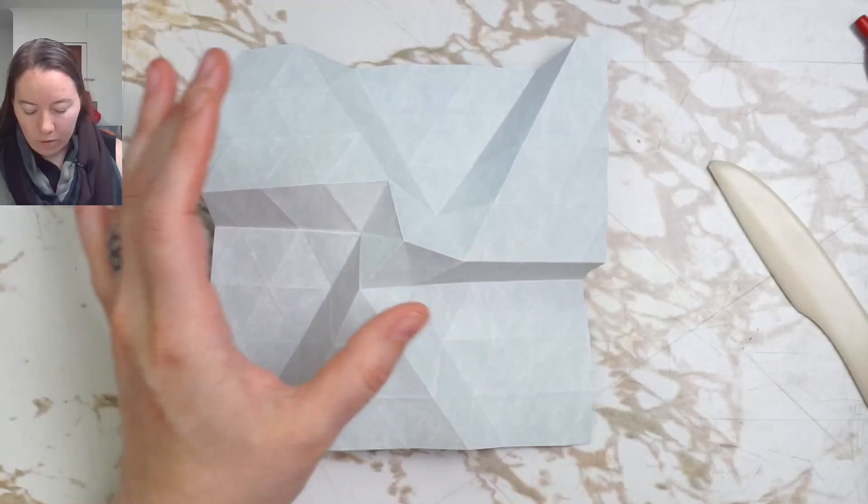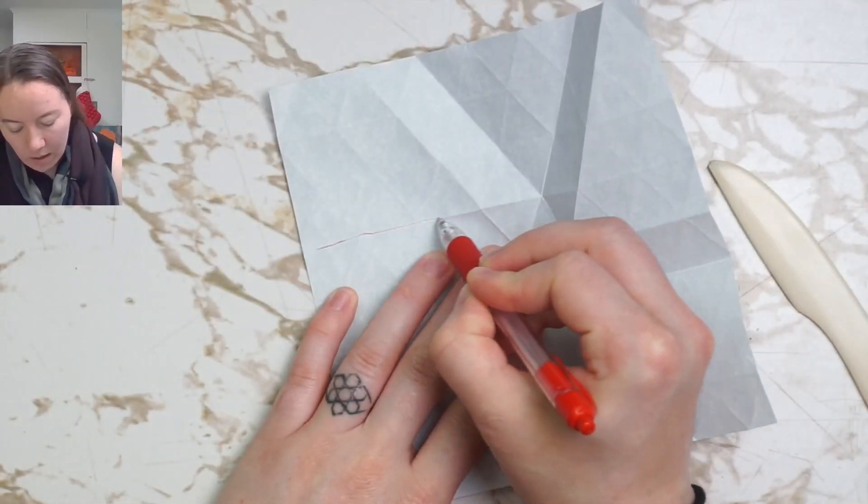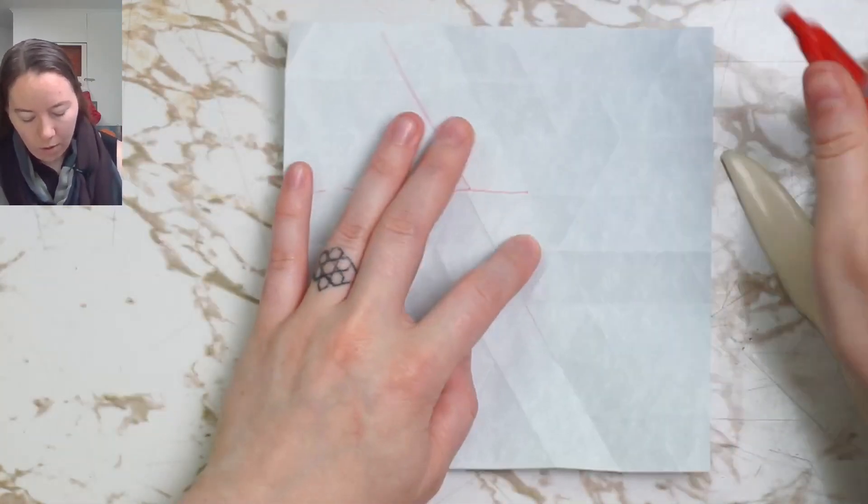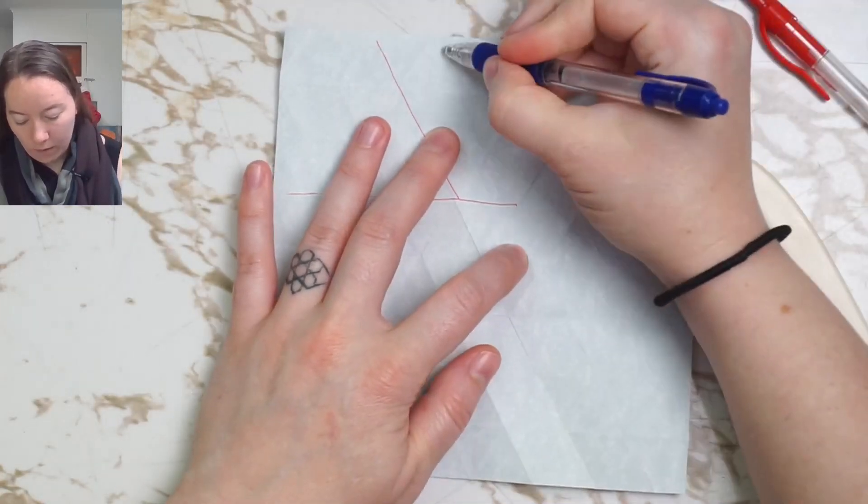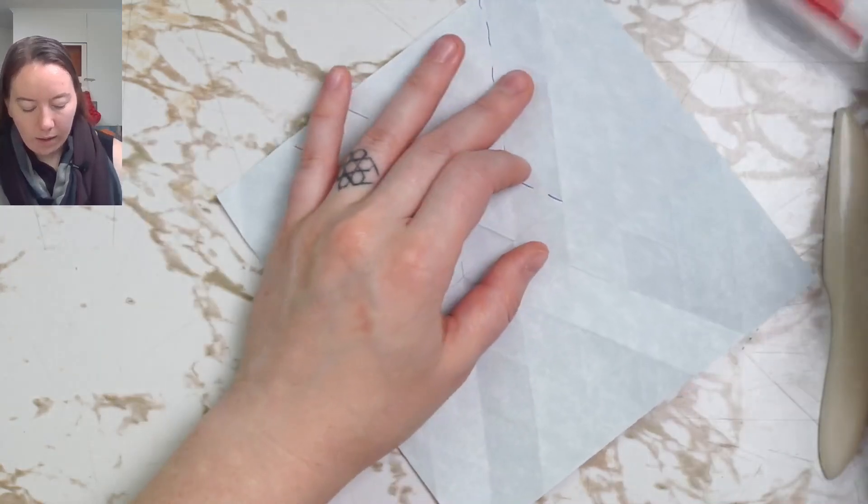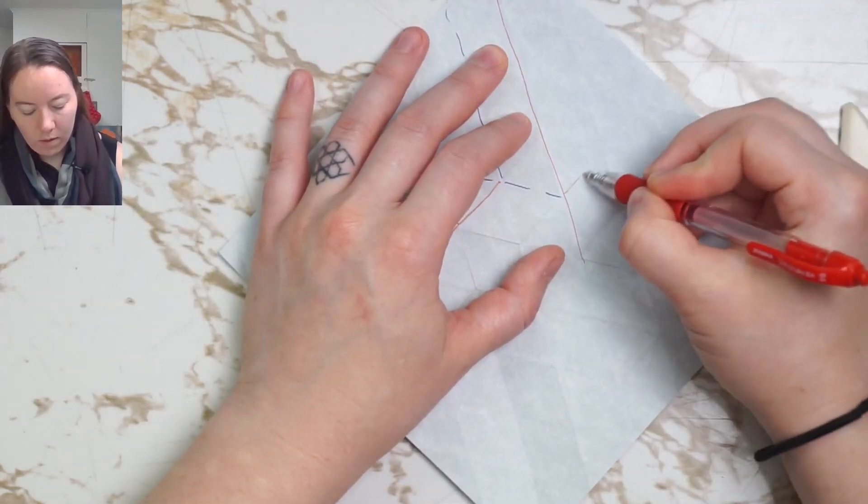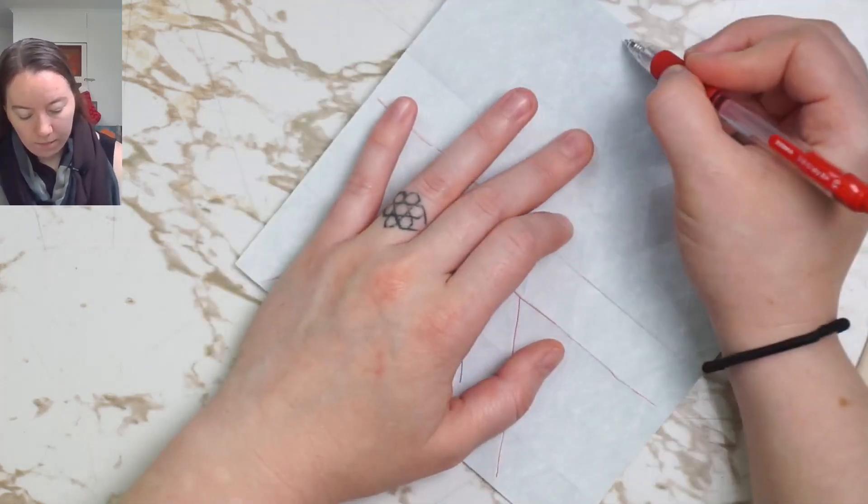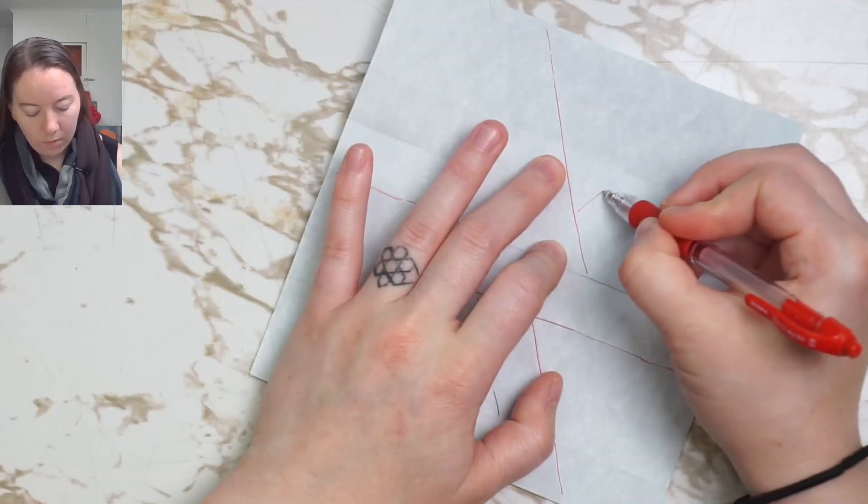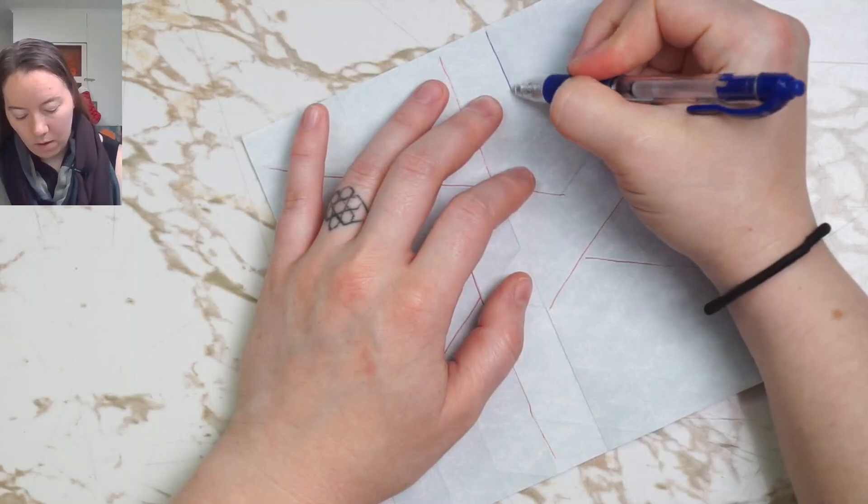And if we want to draw our crease pattern here, I can spot where these folds are going to be from how the paper is laying. And then I can use symmetries that we have like every other set of folds doing the same thing to get the rest of the pattern.